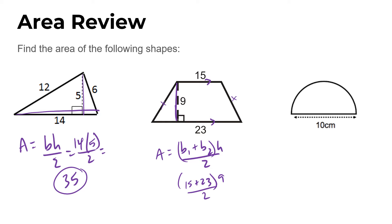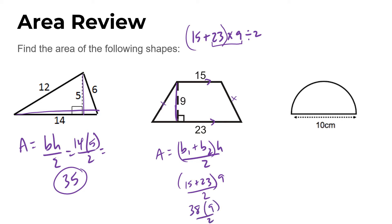It's important that when using your calculator, you don't just type 15 plus 23 times 9 divided by 2 straight in. The calculator follows order of operations and will do multiplication before addition, giving you the wrong answer. If you're entering it all at once, put parentheses around the bases. Better yet, just add 15 and 23 first to get 38, then multiply by 9 and divide by 2: 38 times 9 divided by 2 equals 171. The area is 171 square units.